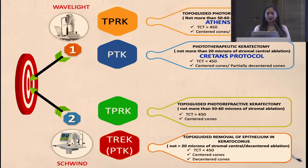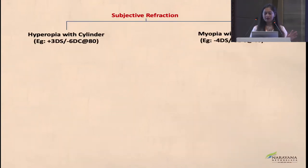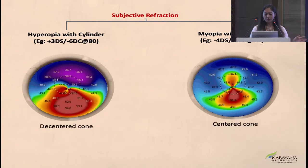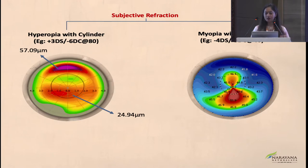The most commonly used platforms are the Wavelight and the Schwind. In Wavelight, you can do a TPRK — known as Athens Protocol — and a PTK, known as Kritan's Protocol. Athens Protocol is essentially a PRK. You get two types of scenarios: a decentered cone and a centered cone, and you can have mixed astigmatism or myopia with cylinder. Always do a zero rule — feed in the refraction as zero and see what the center and maximum ablation are. Based on that, you decide whether to go ahead. If on zero refraction the ablation is beyond 40 microns, this is not the right case for topo-guided PRK.